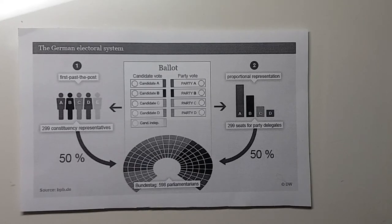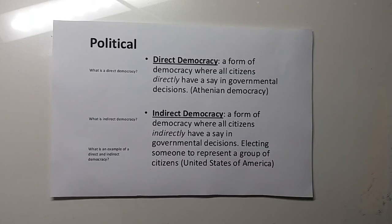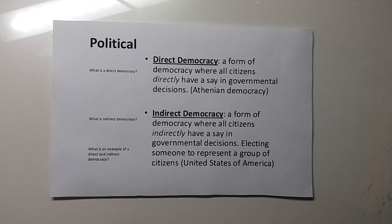There are 299 representatives and 299 seats for party delegates. Besides the representative democracy, there is also direct democracy, where citizens go out and vote directly. Usually they also elect representatives who make sure that the laws are really put into action. An example of a country with direct democracy is Switzerland — in Zurich, citizens vote for local, regional, and national elections and have to vote up to 30 times per year. In direct democracy, all citizens have a say in governmental decisions.